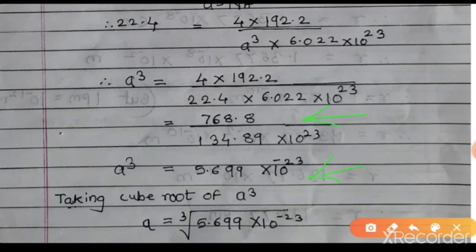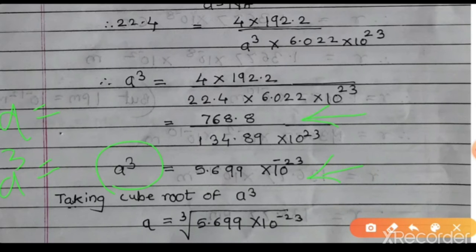Since cube root of 10⁻²³ is not directly possible, we convert: 5.699 × 10⁻²³ = 56.99 × 10⁻²⁴. Now taking cube root: a = (56.99)^(1/3) × (10⁻²⁴)^(1/3). Since −24/3 = −8, we get 10⁻⁸.